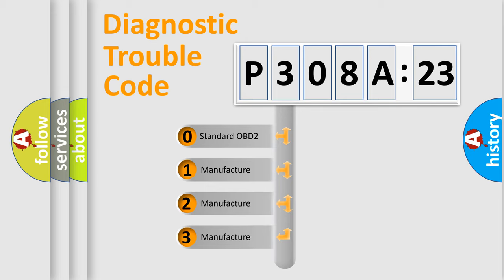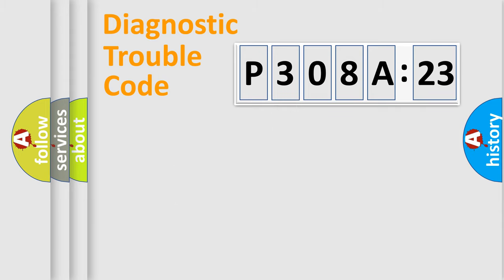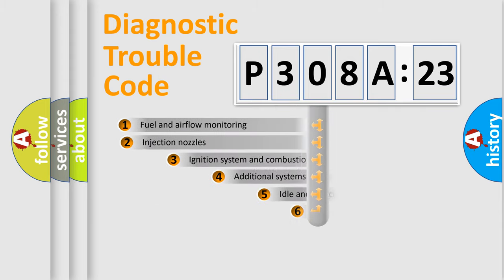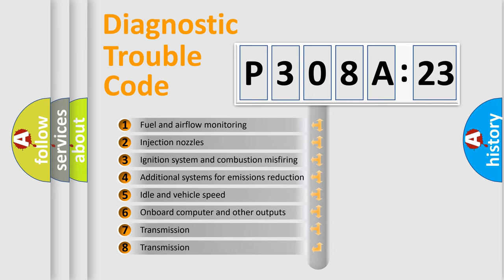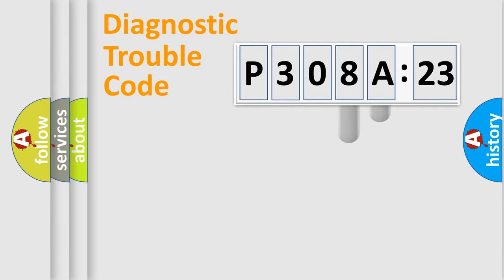If the second character is expressed as zero, it is a standardized error. In the case of numbers 1, 2, 3, it is a manufacturer-specific error. The third character specifies a subset of errors. The distribution shown is valid only for the standardized DTC code. Only the last two characters define the specific fault of the group.